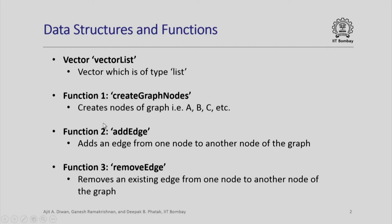First we identify the data structures and functions that we need. We will use a vector list, which is a vector of the type list. We will have the following functions: one function to create graph nodes — so nodes A, B, C, D, E, F, G — whatever nodes we have, we need to create those nodes for the graph. Next is a function required to add an edge from one source node to a destination node.